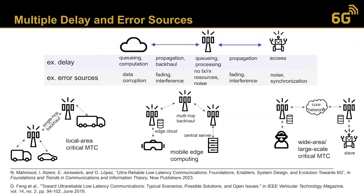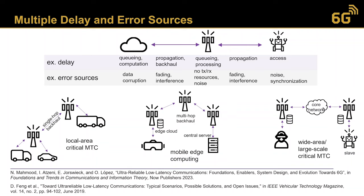In mobile edge computing, the transmission of packets to central servers via multi-hop backhaul means processing and computation delay could be comparable to other delay components. In wide area critical MTC networks, the core network delay may be the most significant source. Each of these delay and error sources has its own characteristic statistical and random behavior, and all of them should be carefully considered when designing solutions.